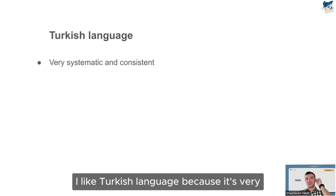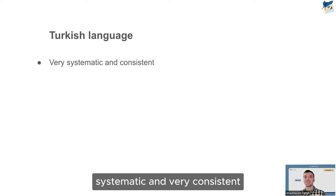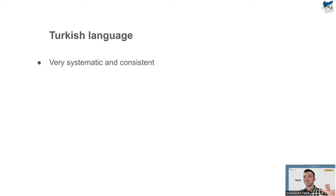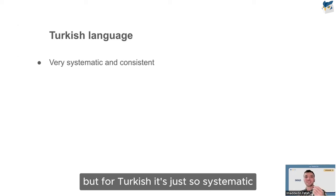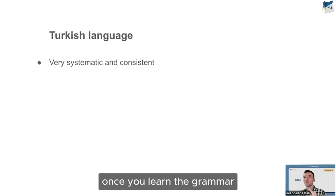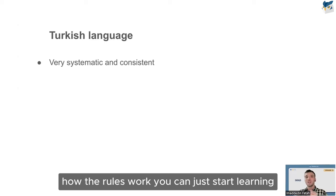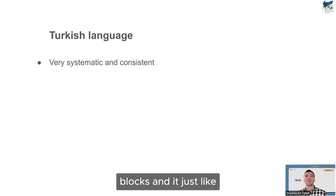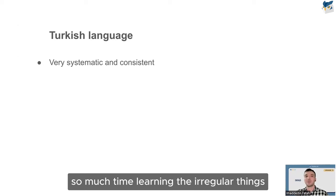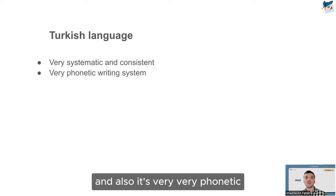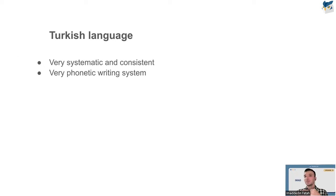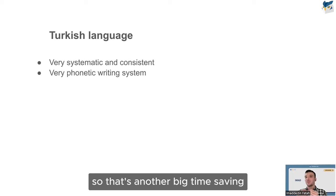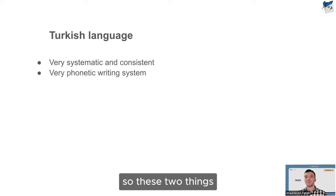I like Turkish because it's very systematic and consistent. When learning Spanish, there are more irregularities than regularities — all these conjugations you have to learn separately. But in Turkish, once you learn the grammar rules, you just learn vocabulary and slot it in. You don't waste time on irregular forms. Turkish is also very phonetic — unlike English, where a word is written one way and read another. In Turkish, everything is pronounced as written.